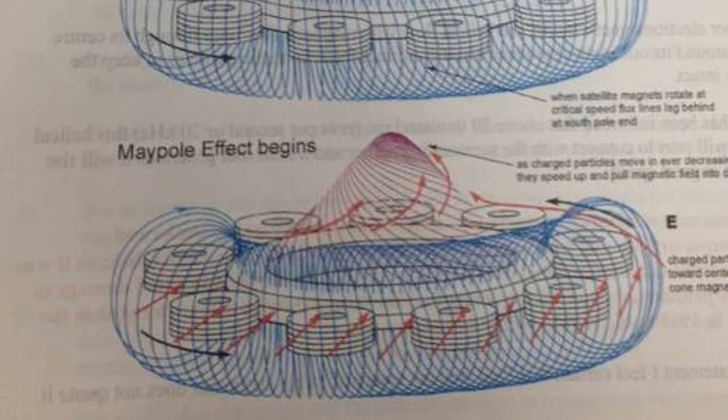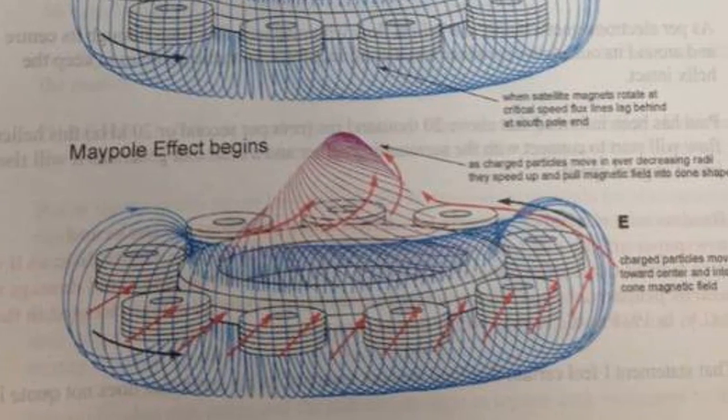Inside each of these IGVs there is a powerful three-ring SEG which provides levity to the craft through a combination of magnetic, electrostatic, and flywheel effects, many of which I freely admit are beyond my comprehension.